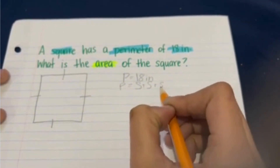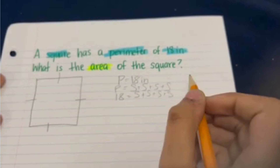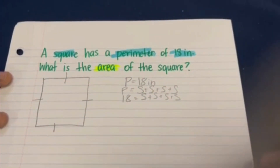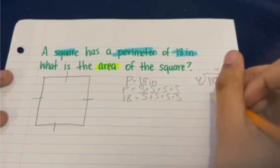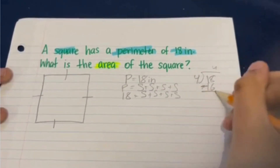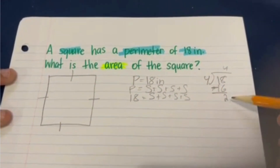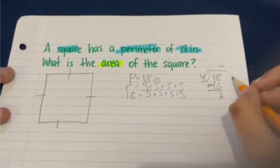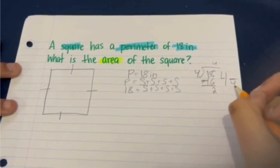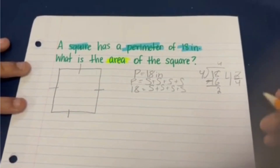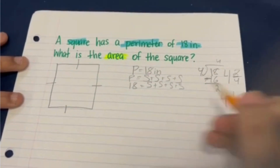We already know that the perimeter is 18 inches, and because perimeter equals side plus side plus side plus side, 18 will equal side plus side plus side plus side. To find each side, we have to divide 18 by 4. Four can go into 18 four times — four times four is 16, and 18 minus 16 is 2 — leaving a remainder of 2. We can't just leave this as a remainder; we need to turn it into a fraction, giving us a quotient of 4 with remainder over divisor, which reduces to 4 and one half.